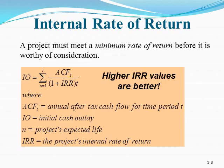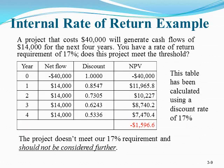The final method is the Internal Rate of Return (IRR). A project must meet a minimum rate of return before it is worthy of consideration. For this example, suppose a project costing $40,000 will generate cash flows of $14,000 per year for the next four years, and you have a required rate of return of 17%. Does this project meet the threshold?